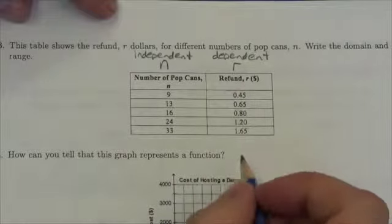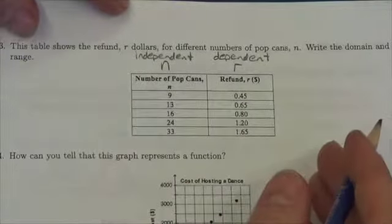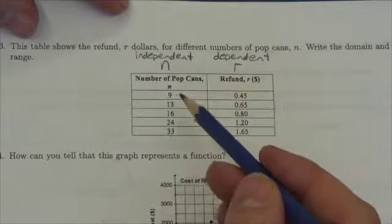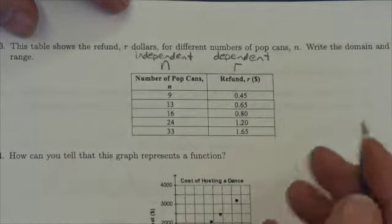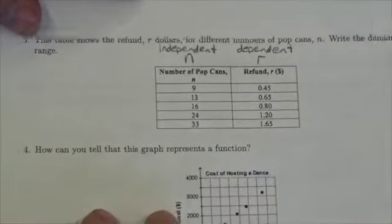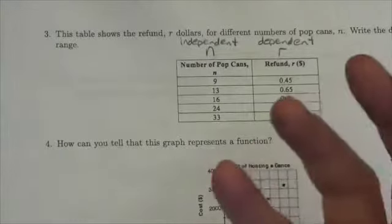So when I talk about domain I'm talking about this right here, when I talk about range I'm talking about this right here. Now if there was no context given to this problem, my domain would simply be this set of numbers, my range would simply be this set of numbers. However, there is a bit of a context related here, so I got to bring some interpretation to this.